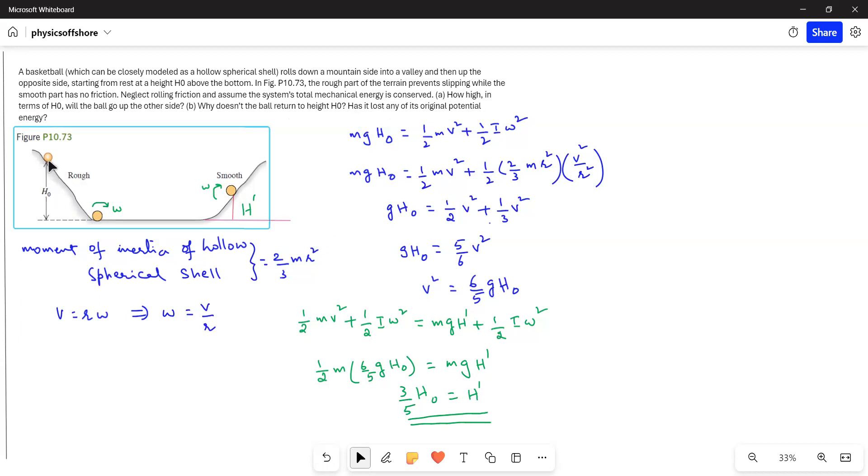Initially, the ball has gravitational potential energy. While it is rolling, it has translational kinetic energy and rotational kinetic energy. According to the law of conservation of energy, total energy of the system remains constant. So the initial energy must be equal to the final energy.